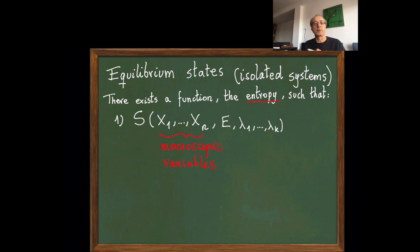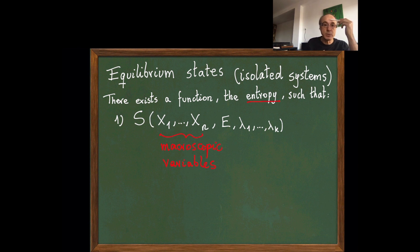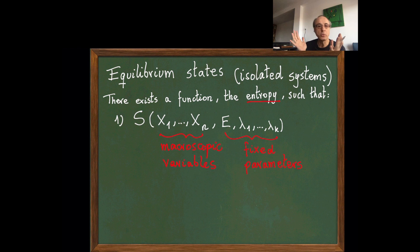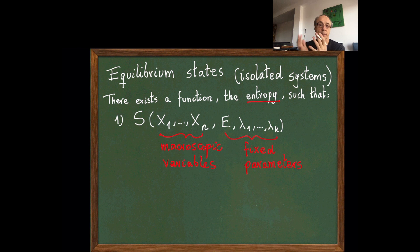First, entropy is a function of the macrostate of the system, which is described by some macroscopic variables—I call them variables because they can change when I let the system evolve—and some parameters which are fixed. If I have a gas, it could be the volume, an external magnetic field, a gravitational field, and so on. Among these fixed parameters, we have the energy, because the system is isolated and the energy is fixed.